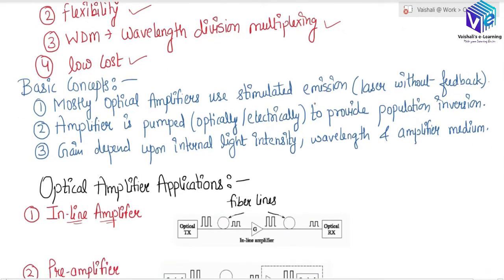Regarding the basic concepts of optical amplifiers: optical amplifiers mostly use stimulated emission — they act as a laser without feedback. In a laser, stimulated emission is also present, but in a laser there is feedback; here in the optical amplifier we don't have any feedback. The amplifier can be pumped to provide population inversion, and the pumping can be done either optically or electrically.